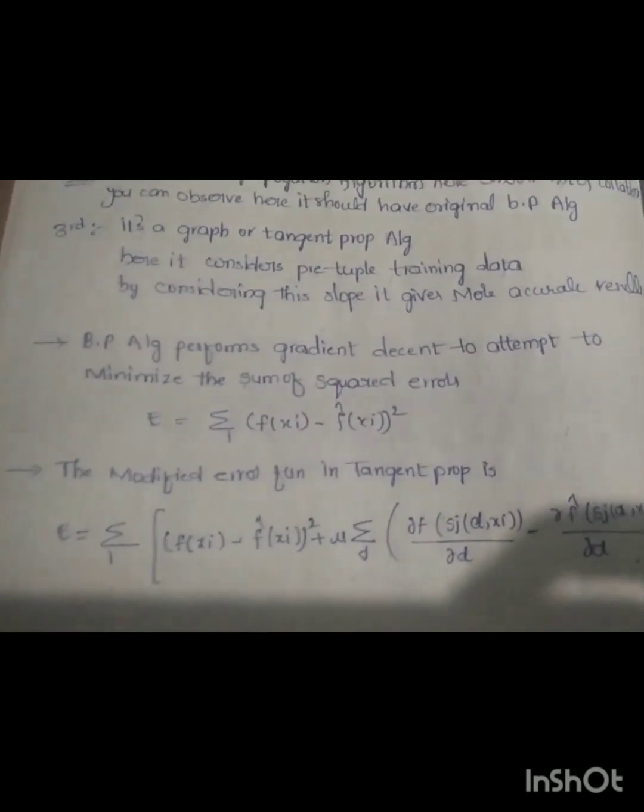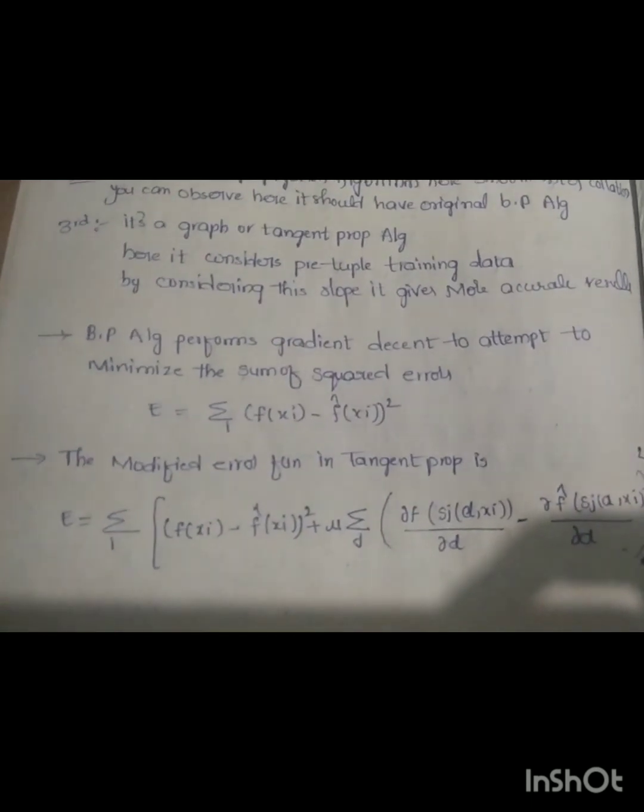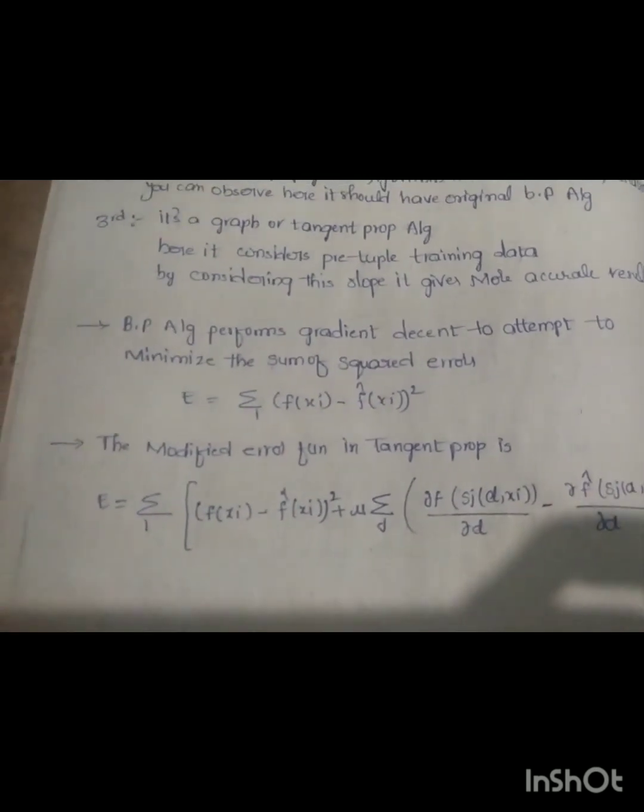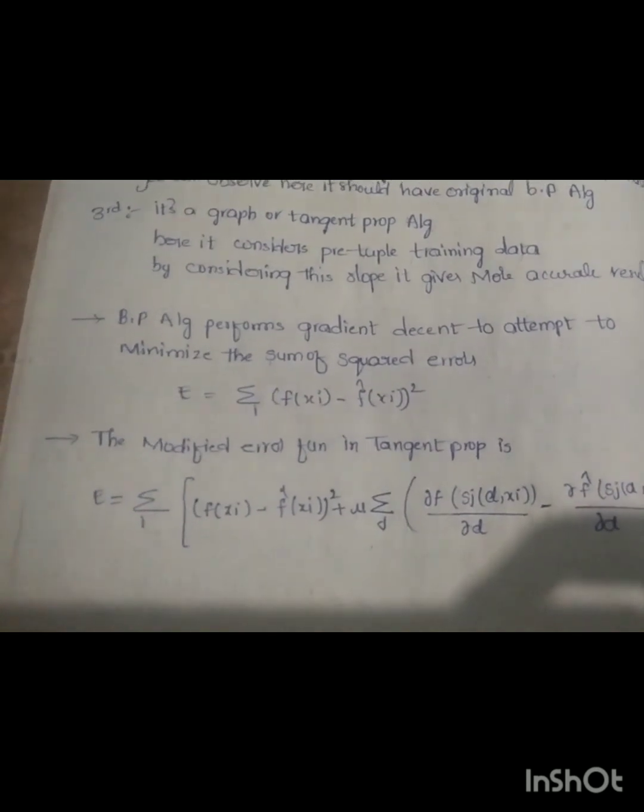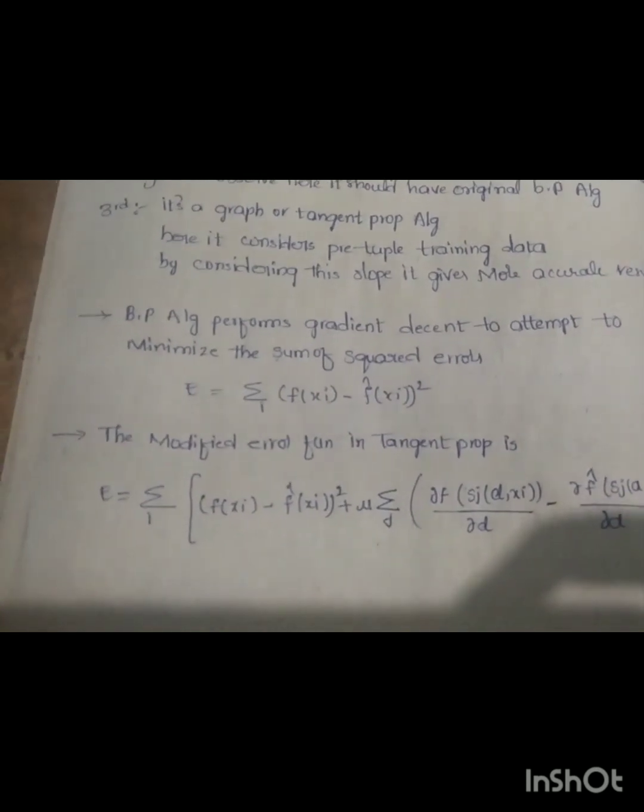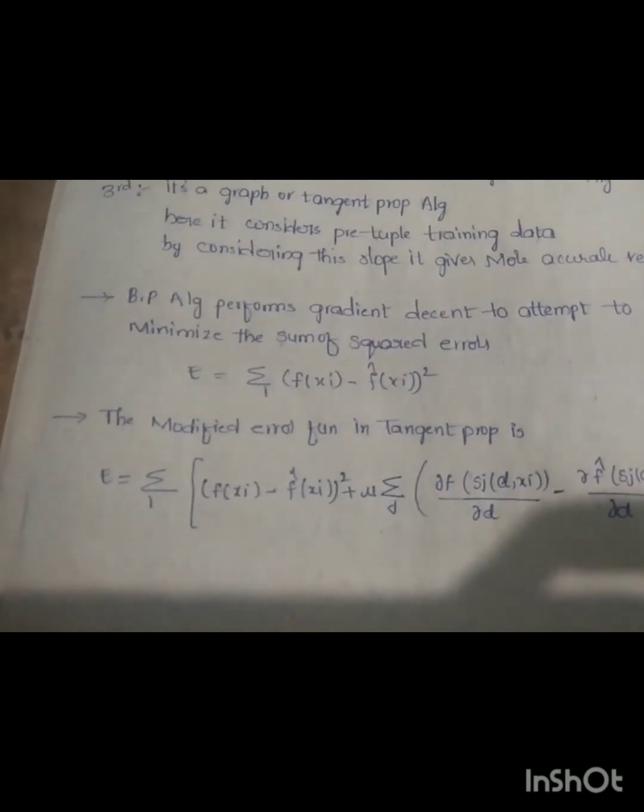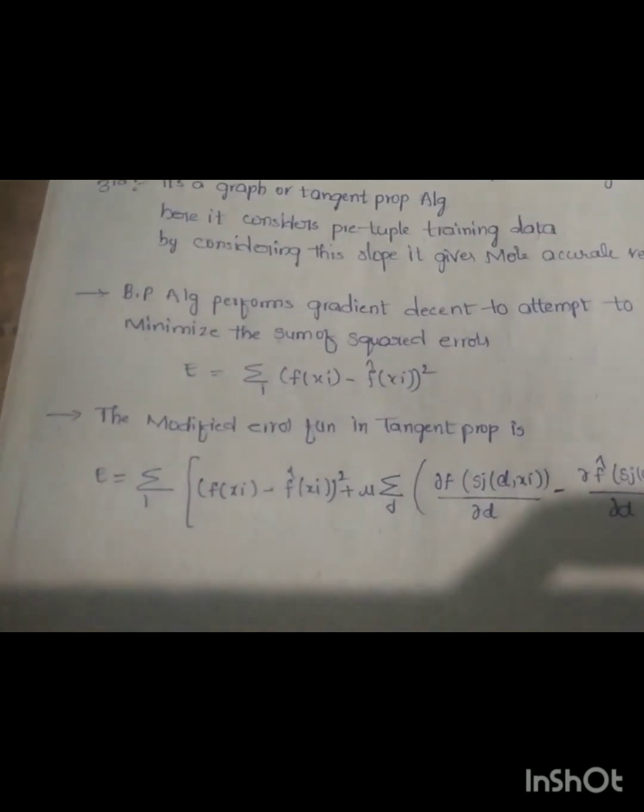Backpropagation algorithm performs gradient descent to minimize the sum of squared errors. For example, error is the sum of f of xi minus the real values, whole squared. Using this formula, we can find the errors.